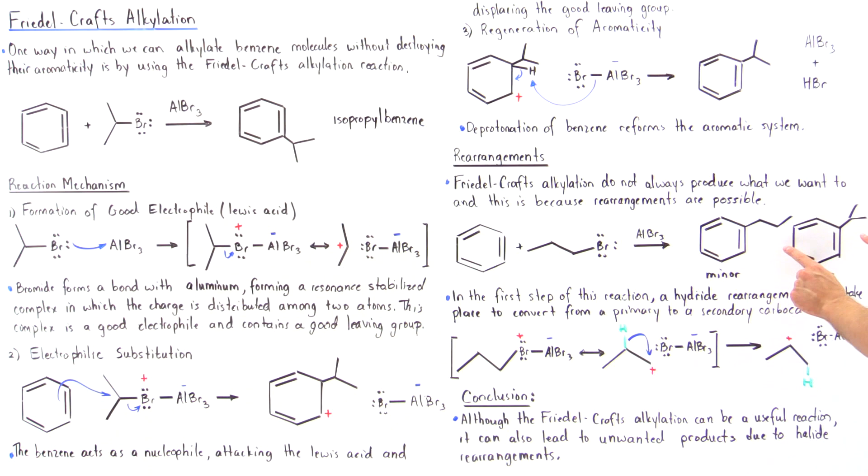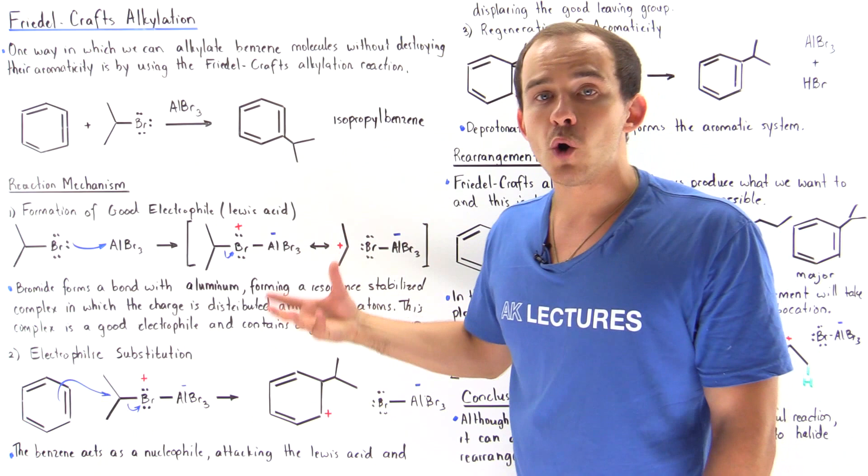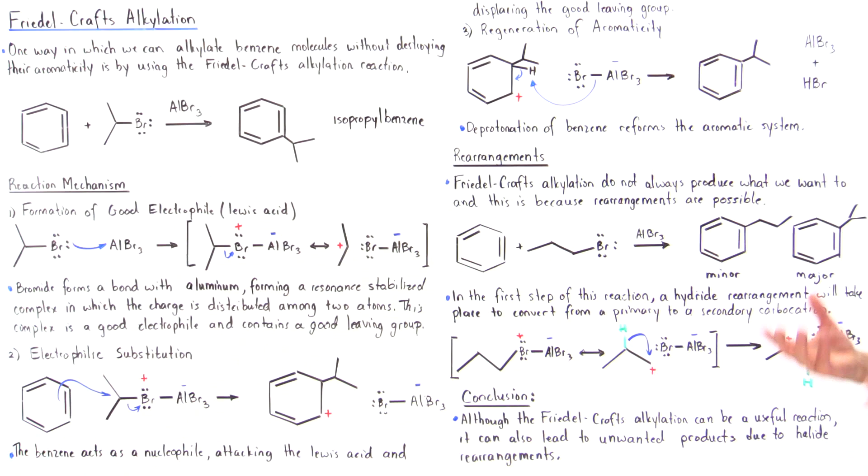When the halide shift takes place, we form a secondary carbocation, which is also resonance stabilized — the bromide forms a bond with the middle carbon. Because this secondary carbocation intermediate is more stable than the primary carbocation — being thermodynamically more stable and lower in energy — it will exist more of the time. The product that goes through this more stable intermediate will dominate, which is why the isopropyl benzene is the major product and propyl benzene is the minor product.